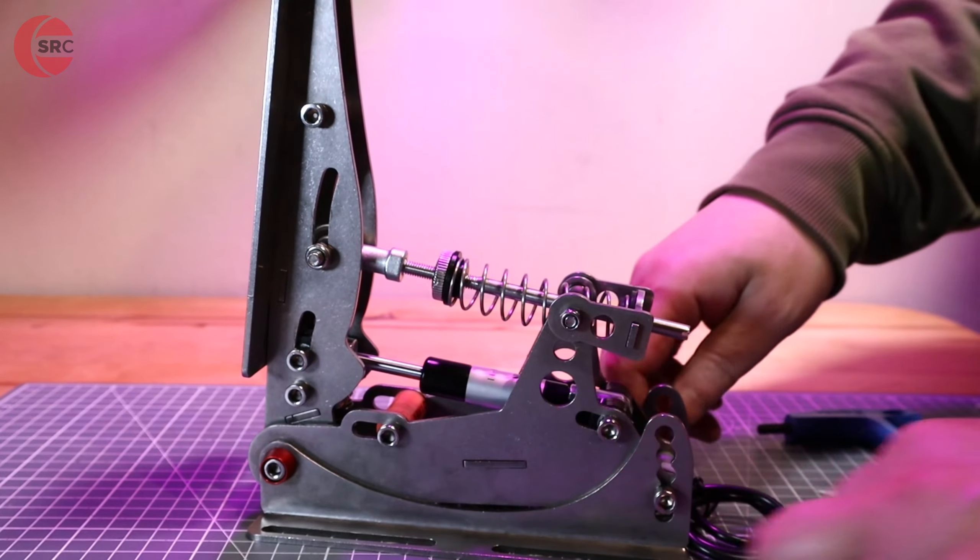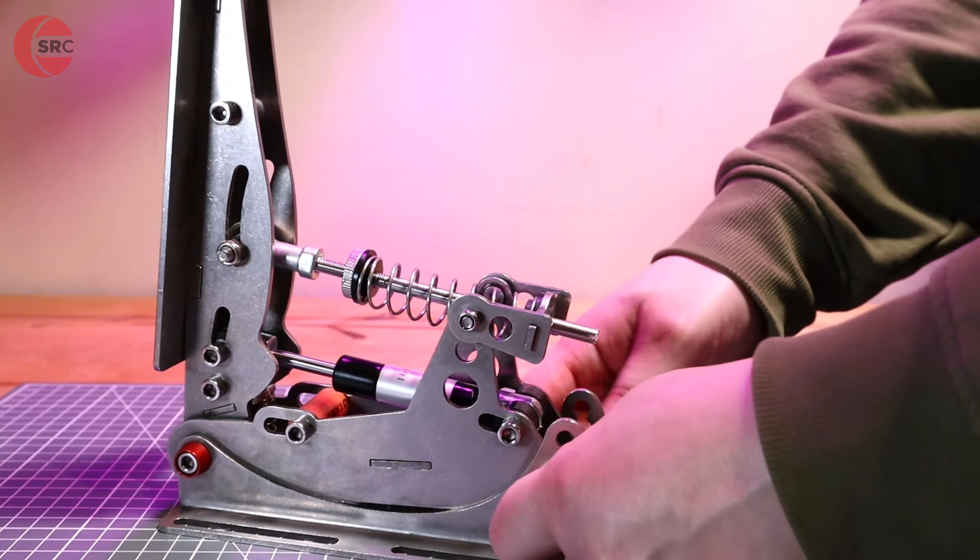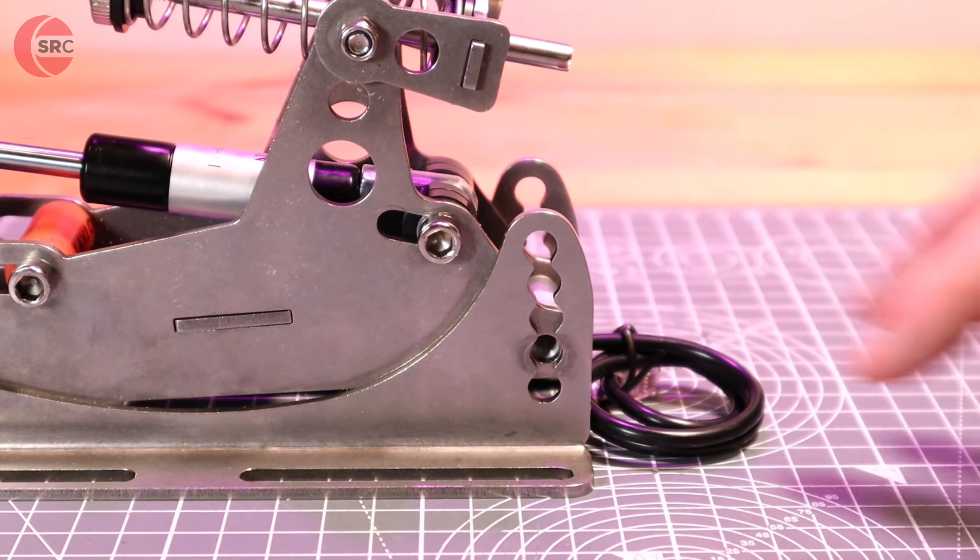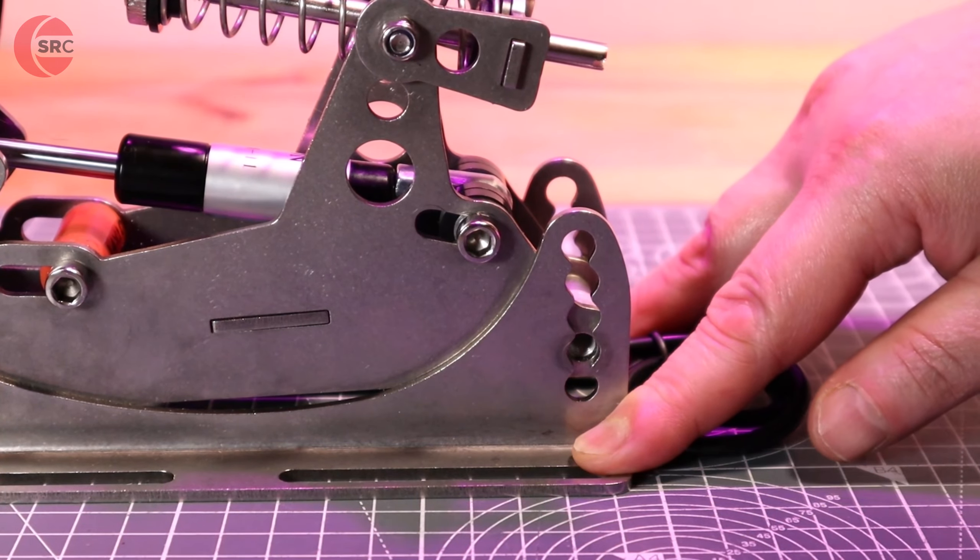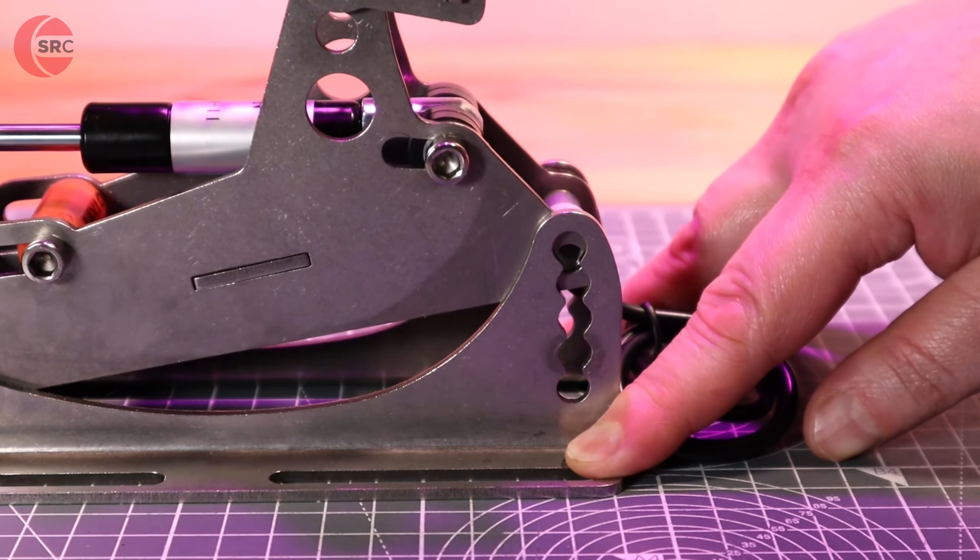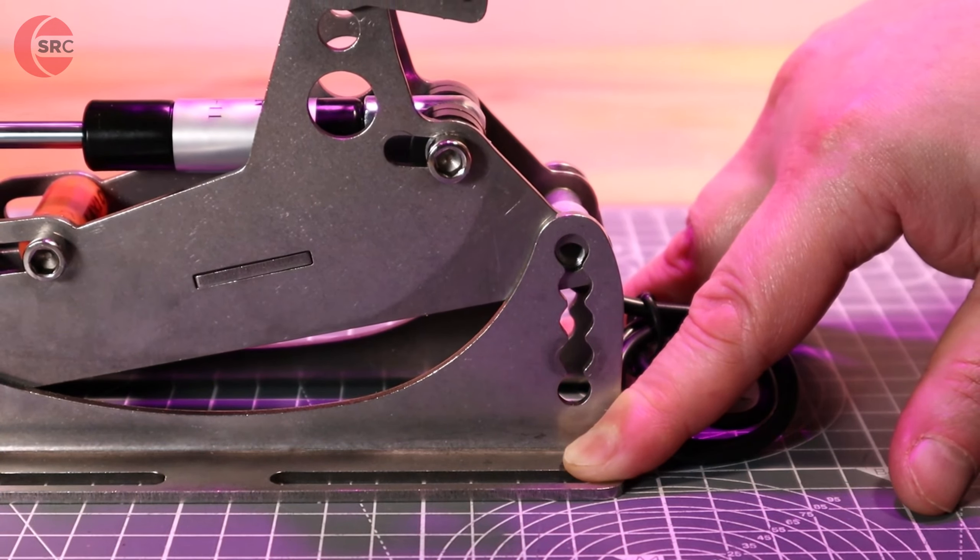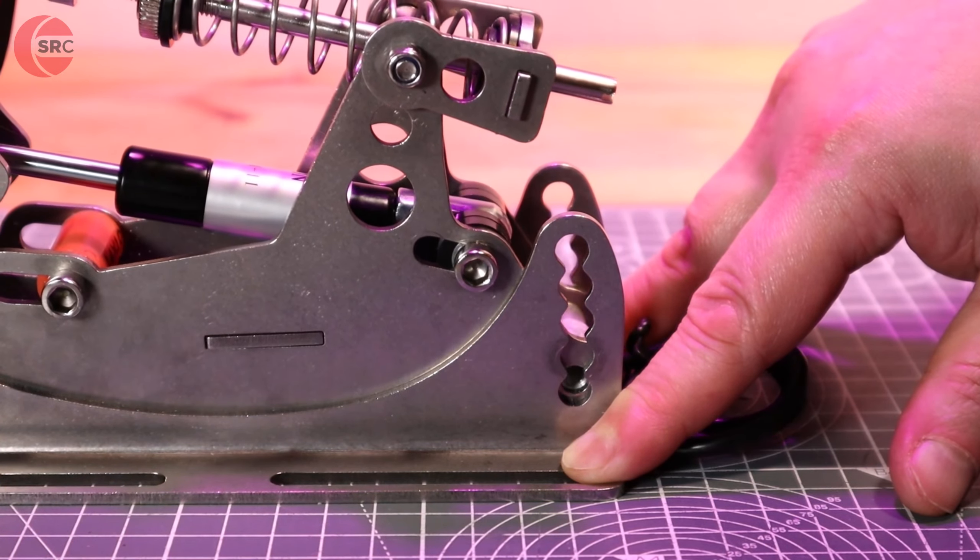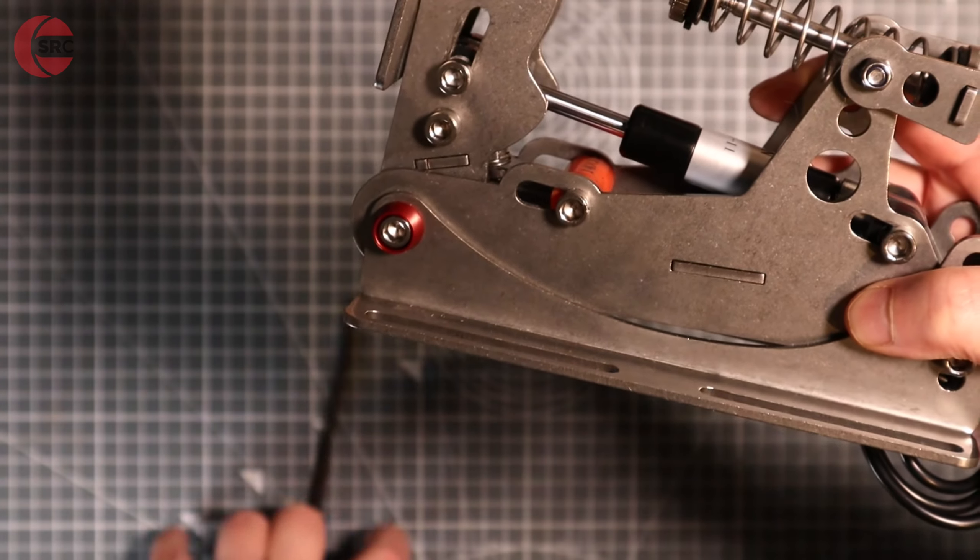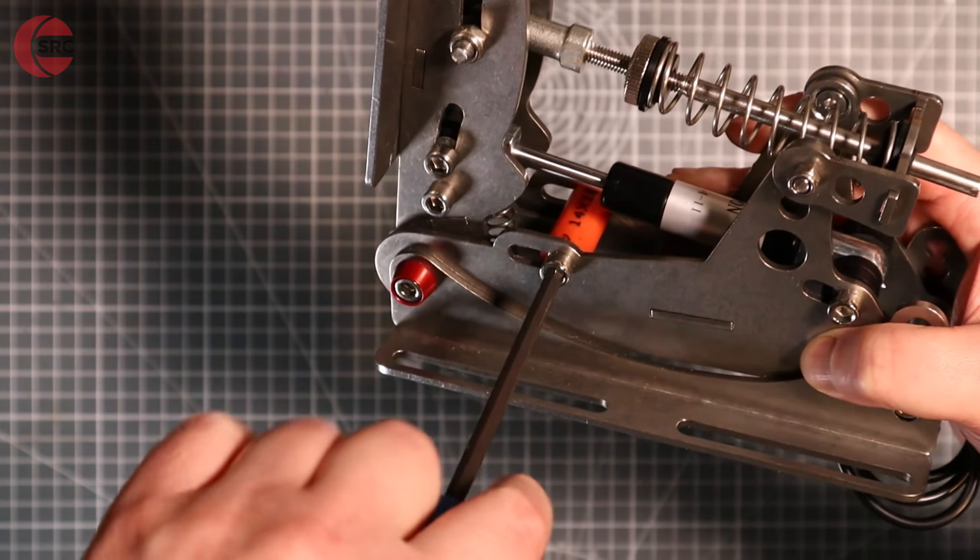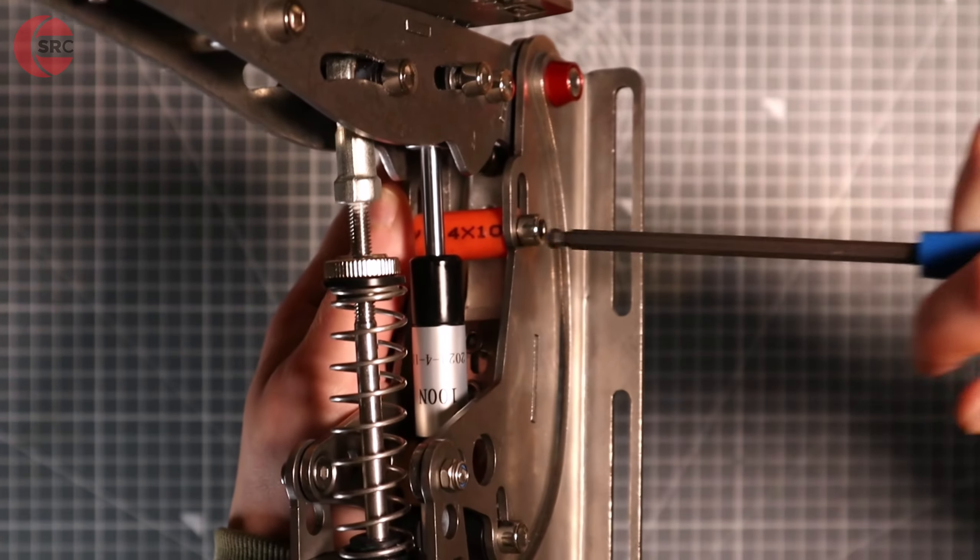By removing these bolts, the pedal angle is adjustable. Once you've set the desired offset, screw the bolts back in. The pedal stop can be moved to alter the pedal travel.